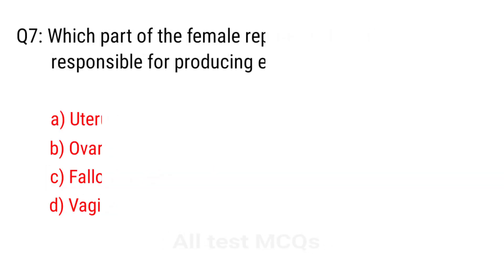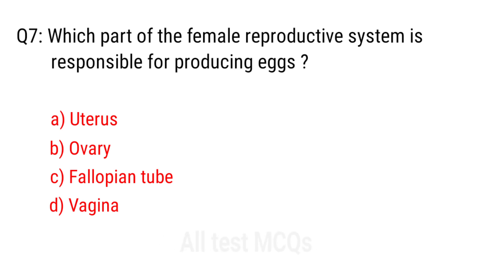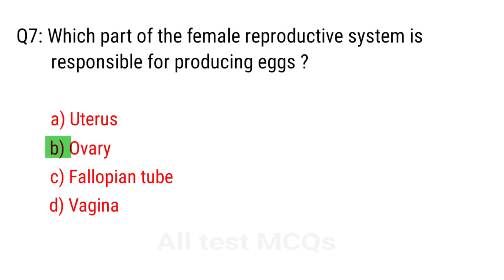Q7. Which part of the female reproductive system is responsible for producing eggs? The right answer is option B: Ovary.